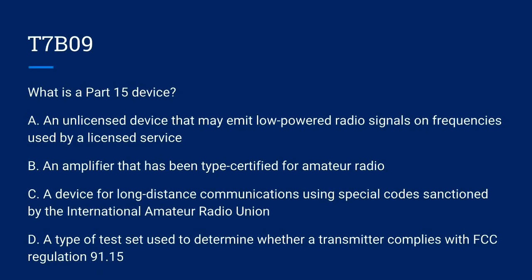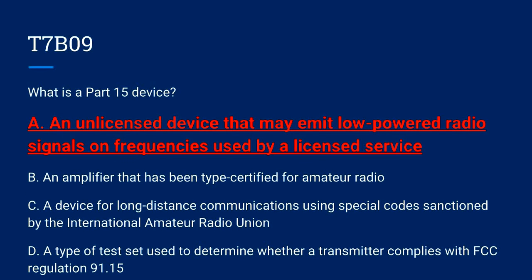T7B09. What is a Part 15 device? A. An unlicensed device that may emit low powered radio signals on frequencies used by a licensed service. B. An amplifier that has been type certified for amateur radio. C. A device for long distance communications using special codes sanctioned by the International Amateur Radio Union. Or D. A type of test set used to determine whether a transmitter complies with FCC Regulation 91.15. The correct answer is A. An unlicensed device that may emit low powered radio signals on frequencies used by a licensed service.